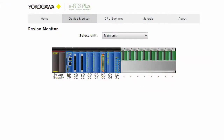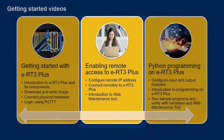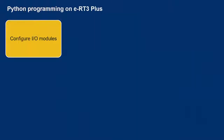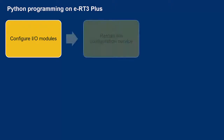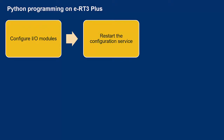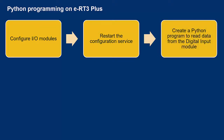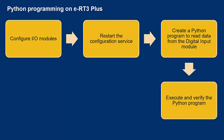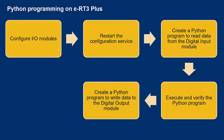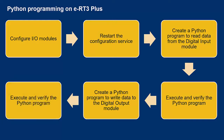We then verify the output of the programs on the web maintenance tool, and also verify the same on the IO modules physically connected to the setup. To execute a Python program on ERT3 Plus, first we modify the settings in the IO configuration file according to the connected modules, then restart the IO configuration service. Next we create a program to read a relay from the digital input module, transfer it to the device, execute it, and verify results. Similarly, we create a program to write a relay to the digital output module.